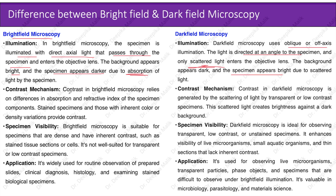Contrast mechanism: contrast in bright field microscopy relies on differences in absorption and refractive index of the specimen components; stained specimens and those with inherent color or density variations provide contrast. Contrast in dark field microscopy is generated by the scattering of light by transparent or low-contrast specimens, and this scattered light creates brightness against a dark background.